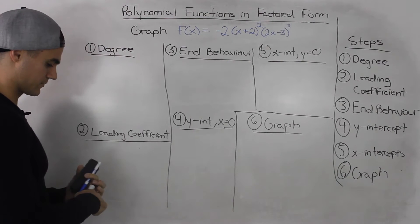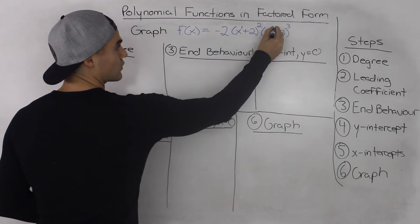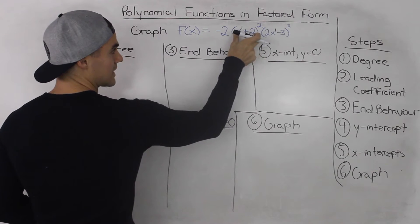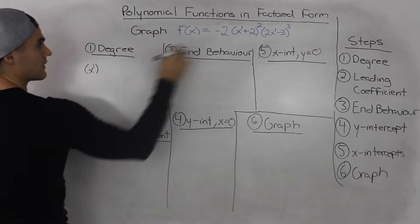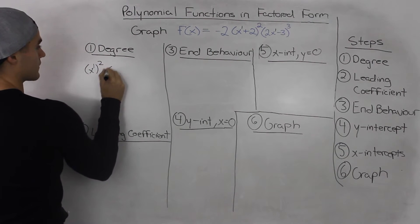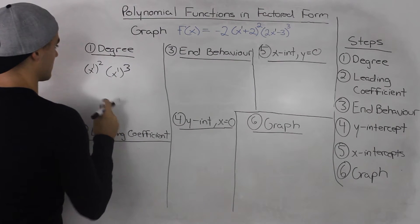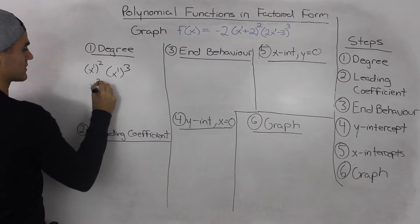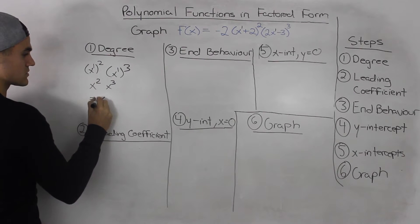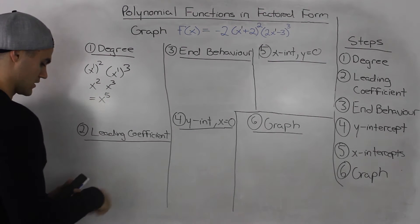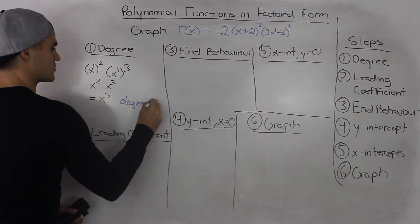The first thing to find is the degree. The way we do that is we take each x in the bracket to the power of whatever it is. These two x's are to the power of 1, and then we take those x's to the power of whatever the bracket is. So the first bracket is x to the power of 1, and that is to the power of 2. Then this x is to the power of 1 and it's to the power of 3. Multiplying these exponents, we'd have x² times x³, and since we're multiplying two exponents with the same base, we add the exponents. So this would be x to the 5. The degree of this polynomial is equal to 5.